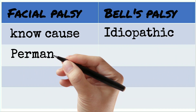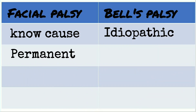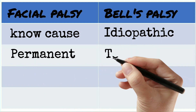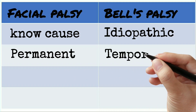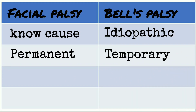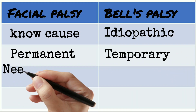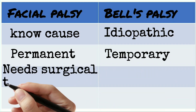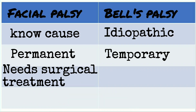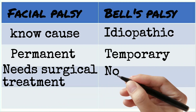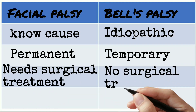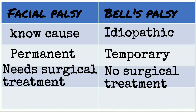Facial palsy is permanent and may last from years to a lifetime. Bell's palsy is temporary and can be cured within three months in 90% of cases. Facial palsy needs surgical treatment, whereas Bell's palsy can be cured without treatment or surgery.